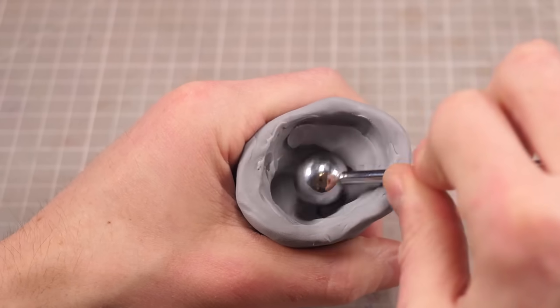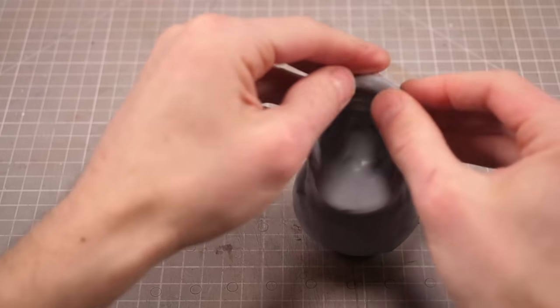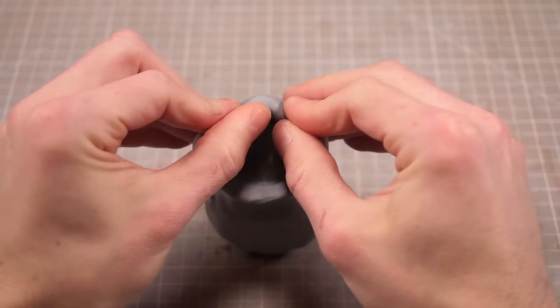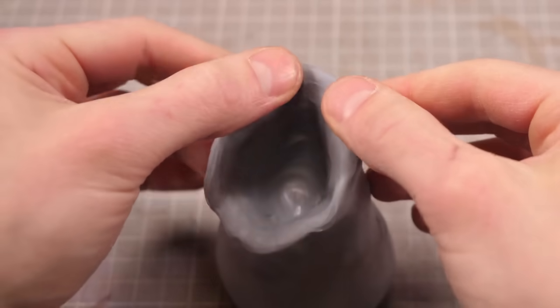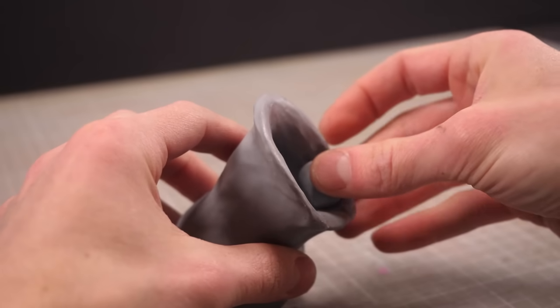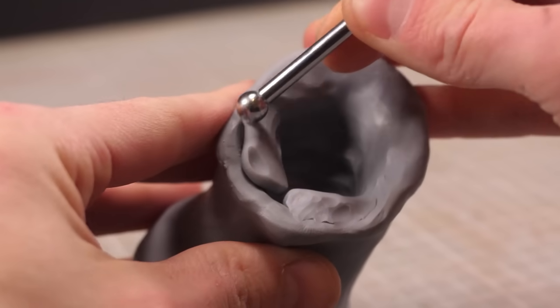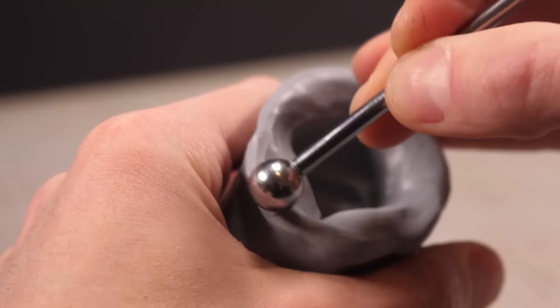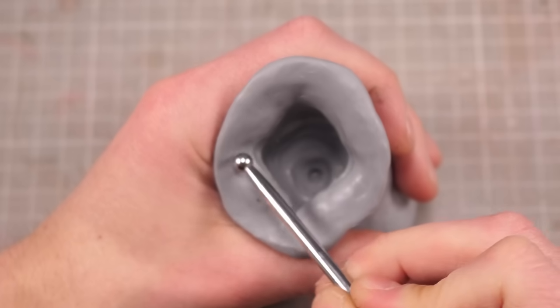Now since Victreebel is mostly mouth I want to take a little extra time to make his mouth nice and gnarly looking. I'll start by smoothing the surface and getting the general shape of the outside then I can build up the inside a bit by adding little lumps of clay here and there before blending it all together and adding a cornucopia of teeth.